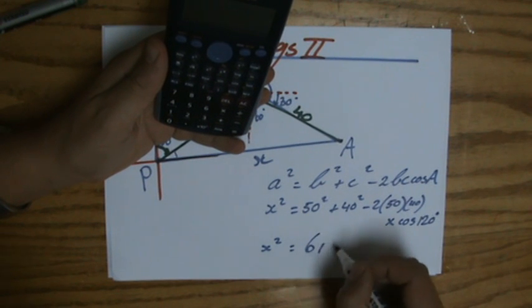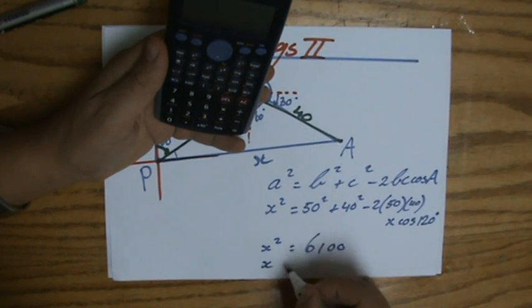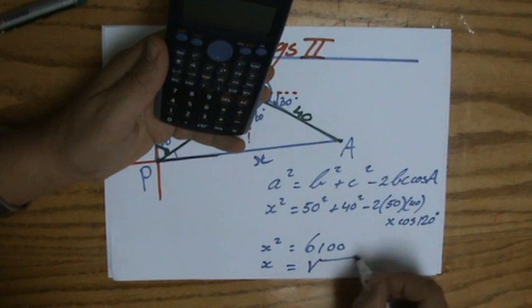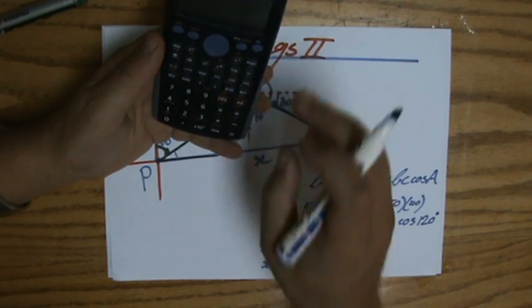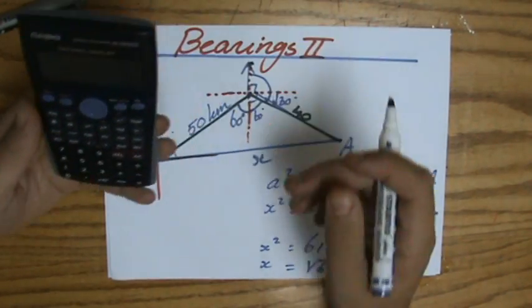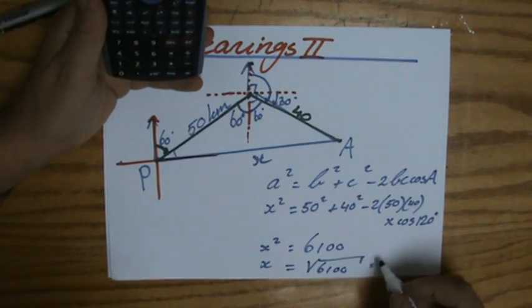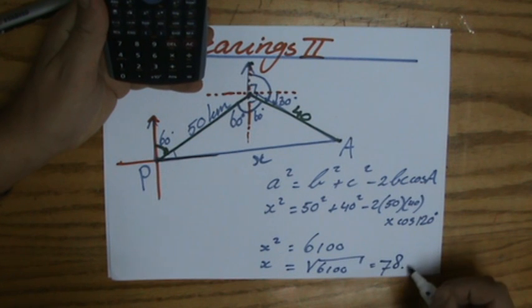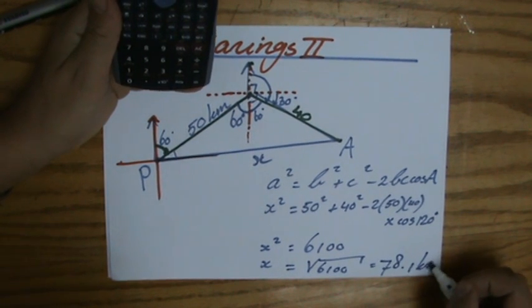and that's going to give me a very large number because that is x squared. So I still have to square root it and correct to three significant figures.